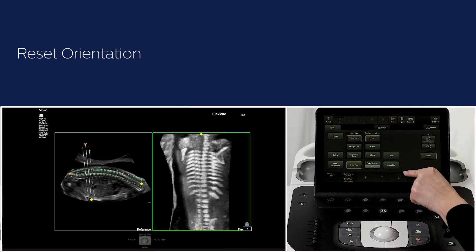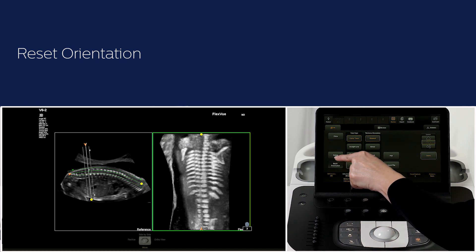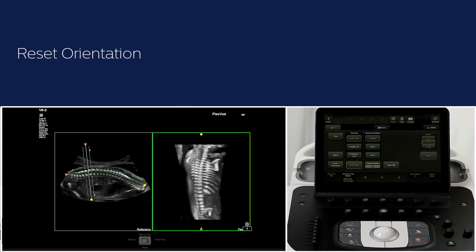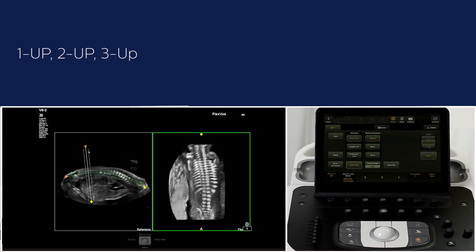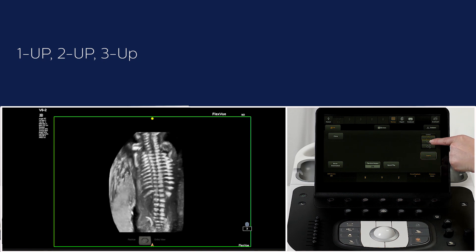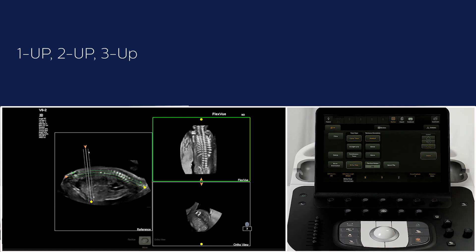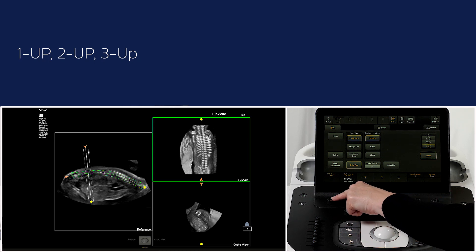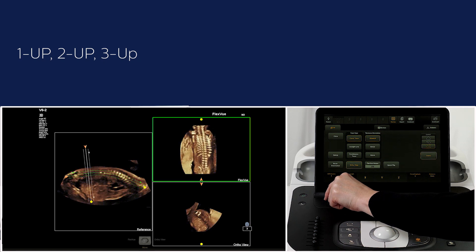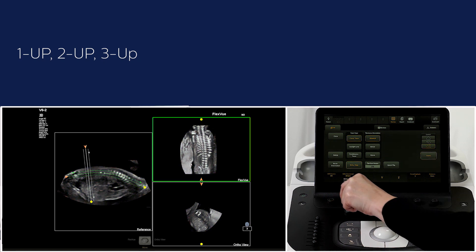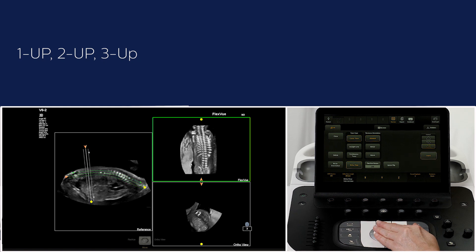Reset orientation will bring the user back to the original FlexView trace and default rotate position. Once the preferred image is achieved, you can select one up, two up, or three up on the touchscreen. Three up will display the reference image, the FlexView image, and the ortho view. Note that the chroma map can be changed at any time. Here you still have the possibility to toggle between the FlexView and ortho view to change the position of the lines.